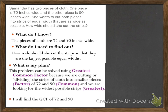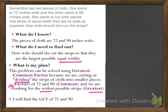This is a brief how-to so you can determine which type of problem each activity card is asking for. What do you know? The pieces of cloth are 72 and 90 inches wide. What do you need to find out? How wide she should cut the strips so they are the largest possible equal widths. The plan: this can be solved using greatest common factor, because we're cutting or dividing — that's 'factor' — into smaller pieces that all have to be the same width, 'common,' and they want the widest, which means 'greatest.'